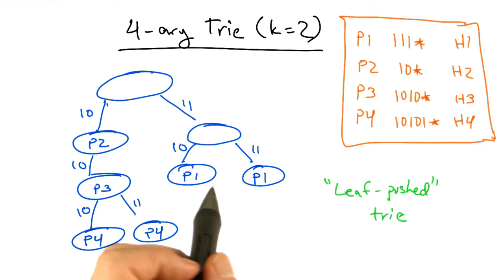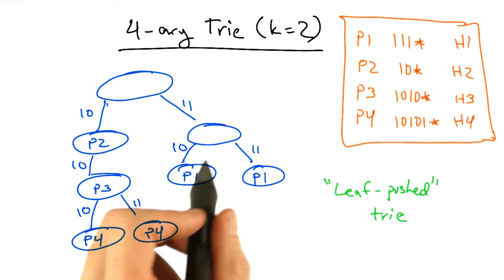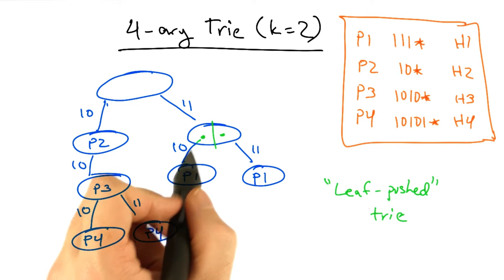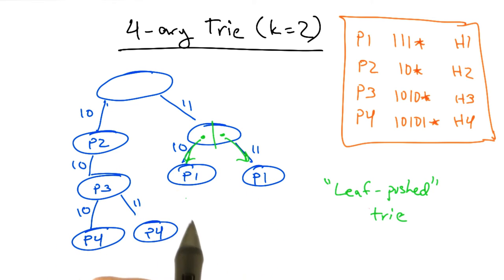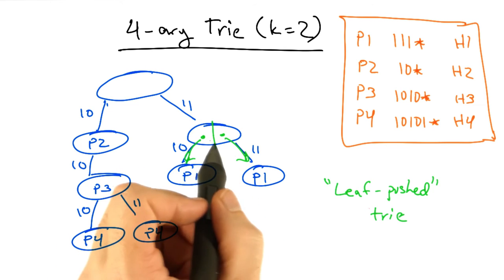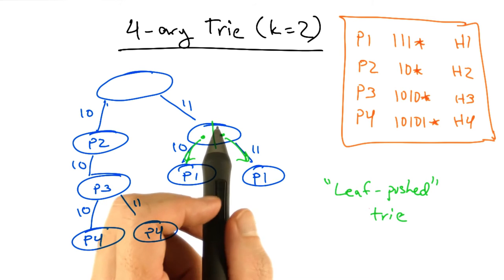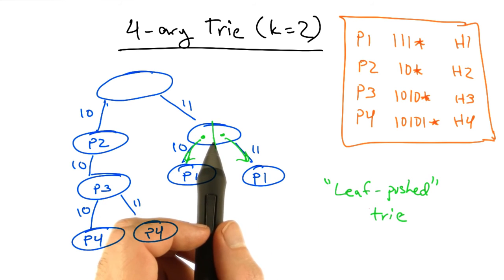One thing we can do to save space further is create what's called a leaf-pushed trie. In such a setting, we can save ourselves some space. Instead of having these pointers, we can push these entries into the left and right side of this node, respectively.